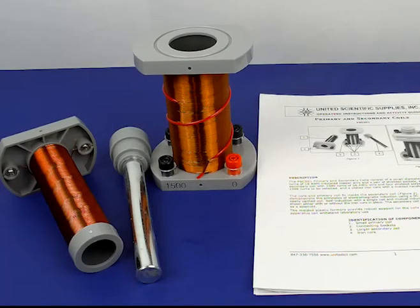The primary and secondary coil apparatus allows students to investigate how an electromagnet works, solenoid, as well as electromagnetic induction, and transformers.